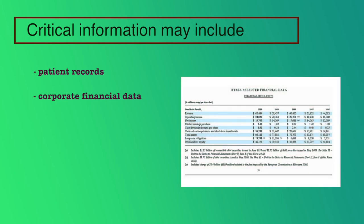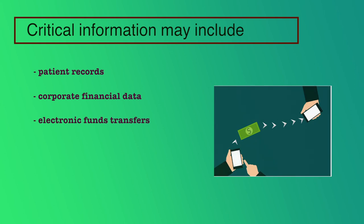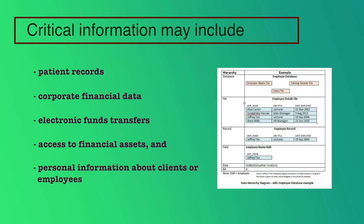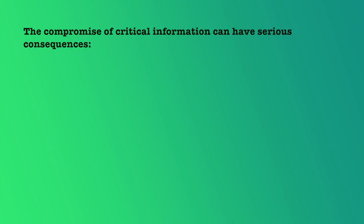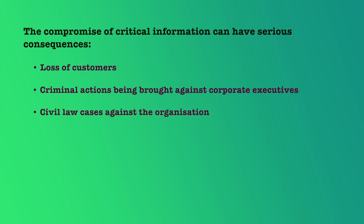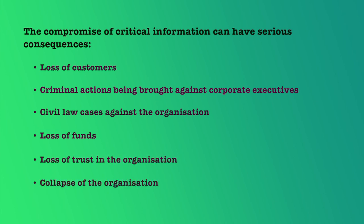Typically, many organizations have information that has value that justifies expensive protection mechanisms. Critical information may include patient records, corporate financial data, electronic fund transfers, access to financial assets, and personal information about clients or employees. The compromise of critical information can have serious consequences including the loss of customers, criminal actions against corporate executives, civil law cases against the organization, loss of funds, loss of trust, and the collapse of the organization.